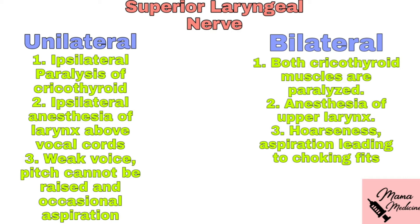In unilateral paralysis of the superior laryngeal nerve, only ipsilateral paralysis of the cricothyroid is seen. Since the superior laryngeal nerve is mainly sensory, ipsilateral anesthesia of the larynx above the vocal cords will be noticed. The voice will be weak, pitch cannot be raised, and there will be occasional aspiration. Bilateral paralysis of the superior laryngeal nerve paralyzes both cricothyroid muscles, and anesthesia of the upper larynx is seen.